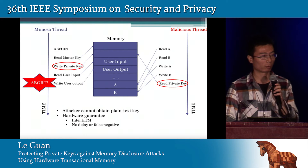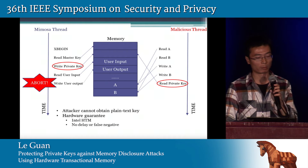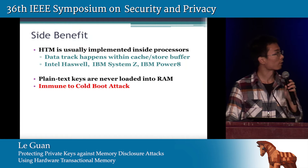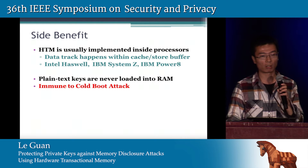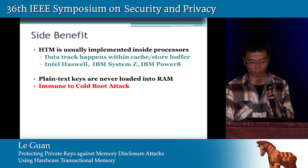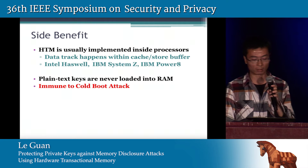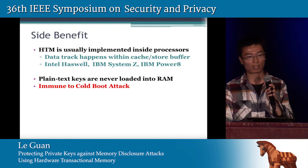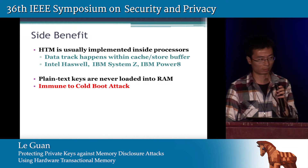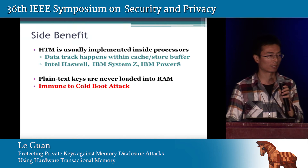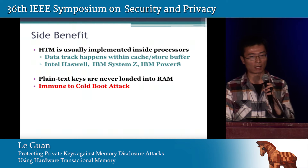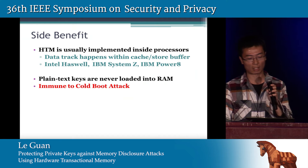Specifically, we employ Intel Hardware Transactional Memory to implement our solution, so there will be no delay or false negative. There is also a side benefit: because almost all commercial hardware transactional memory implementations track data inside the on-chip cache, and the private key is generated on the fly, it will appear nowhere other than the cache. In other words, our solution is immune to some physical attacks targeting DRAM, such as cold boot attacks.